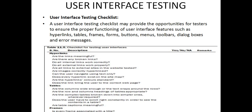The third part is the user interface testing checklist. A UI testing checklist provides opportunities for testers to ensure the proper functioning of user interface features such as hyperlinks, stable frames, buttons, menus, toolbars, radio boxes, and error messages. The checklist specifies descriptions and remarks as yes, no, or not available. Questions under the checklist related to hyperlinks include: Are links meaningful? Are there any broken links? Do all internal links work properly? Do all external links work properly? Are all links to external sites tested? Are images correctly hyperlinked? Can the user navigate using text only? Does every hyperlink exist on the sitemap? Are hyperlink colors standard? Does the link bring the user to the correct webpage?